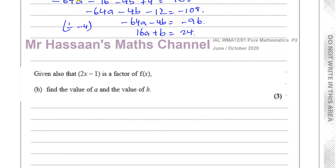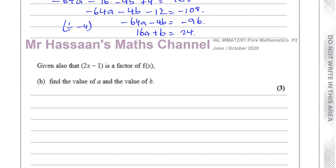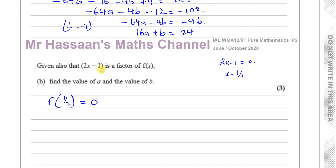Now part b says: given also that 2x minus 1 is a factor of f(x), find the value of a and find the value of b. Since 2x minus 1 equals zero gives x equals a half, substituting f(half) into the function gives zero, because it's a factor — the remainder is zero. So that's the factor theorem.